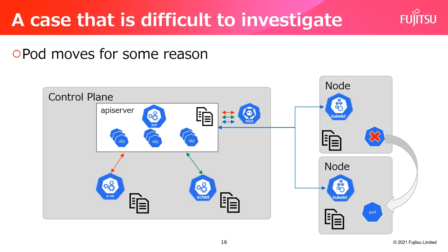In what case would it be difficult to investigate? For example, suppose we want to investigate the cause when a pod moves for some reason. We can investigate how the pod was created from the logs of the newly created pod and other components. However, it is difficult to investigate why the original pod was moved, because each component works independently and the connection between processes is not clearly shown. The reason the pod moved may be in the logs of the original node, but it's not clear when or which node it is. So the larger the cluster, the longer this investigation will take.